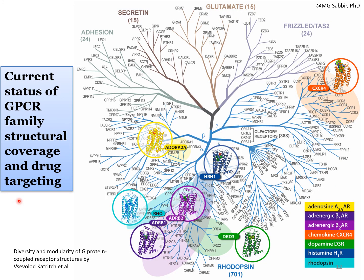A slide shows the current status of GPCR family structural coverage and drug targeting. There is a direct link between structural coverage and drug targeting because knowing the structure of a GPCR is essential for designing an effective drug. Individual members of the six GPCR families are depicted, along with those for whom crystal structures are known. A large number of GPCR crystal structures remain unknown, representing a huge unexplored area for drug targeting and structure determination.